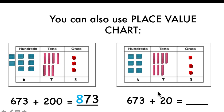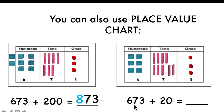Now, when I'm adding tens, I have the number six hundred seventy-three. I will not change the hundreds digit — the number six will stay the same. I will change the tens digit because I will add two more, and the number will not be seven, now it will be nine. The ones digit stays the same. Only the tens digit is changing. The number seven in the middle is the tens digit. When I add twenty more, that digit will change to nine. Number six and number three stay the same.